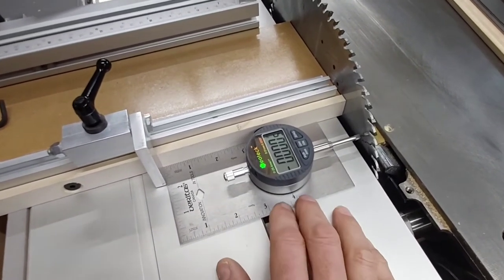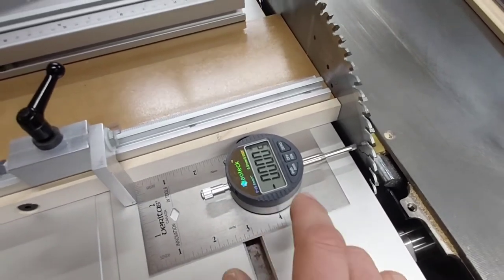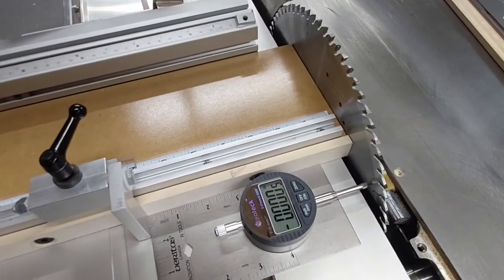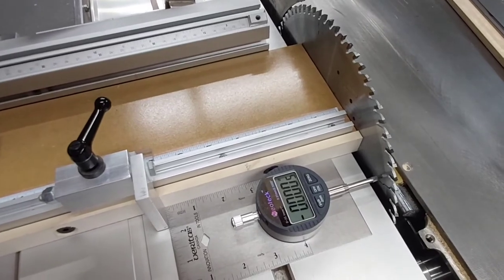I've zeroed the indicator and what I'm going to do is push the slider so that the indicator's at the back of the saw blade. I'm going to take a reading and compare the front reading to the back reading.